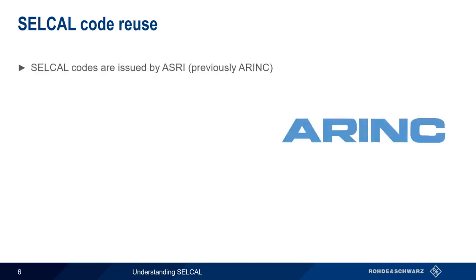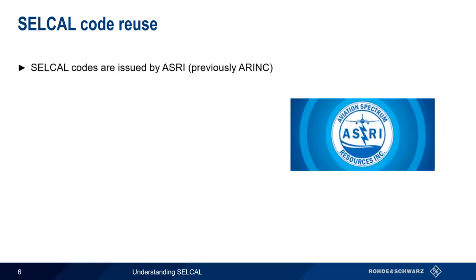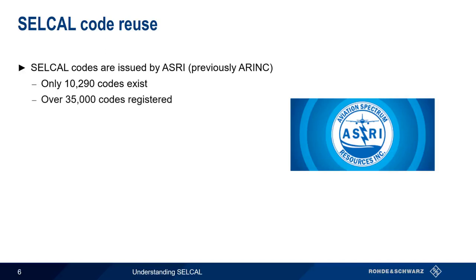Prior to 2006, SELCAL codes were issued by ARINC — Aeronautical Radio Incorporated — but are now issued by ASRI, or Aviation Spectrum Resources Incorporated. There are 10,290 SELCAL code combinations, but over 35,000 codes have been issued to aircraft.